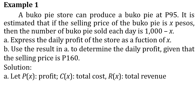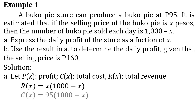For the solution, let P(x) be profit, C(x) be total cost, and R(x) be total revenue. The total revenue R(x) equals x times (1000 minus x), because you multiply the number of BokuPi sold each day by the selling price. The total cost C(x) equals 95 times (1000 minus x), because you multiply the production cost per BokuPi by the number sold each day. The profit P(x) equals R(x) minus C(x) — profit equals total revenue minus total cost.